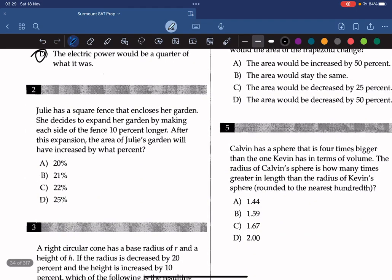Julie has a square fence that encloses her garden. She decides to expand her garden by making each side of the fence 10% longer. After this expansion, the area of Julie's garden will have increased by what percent?